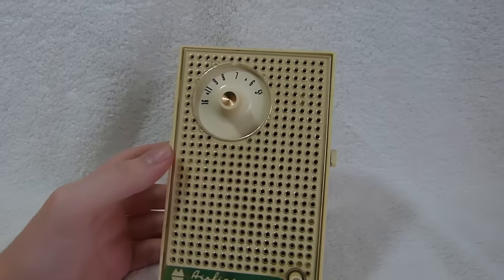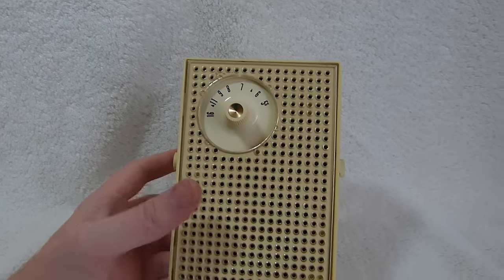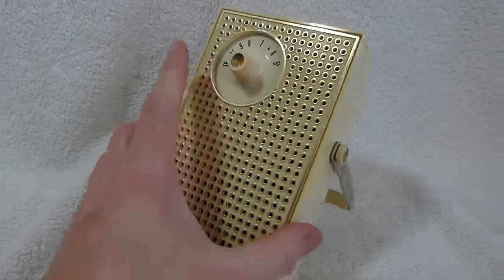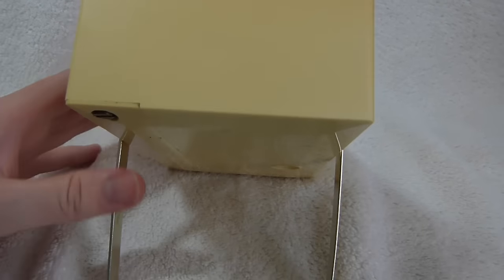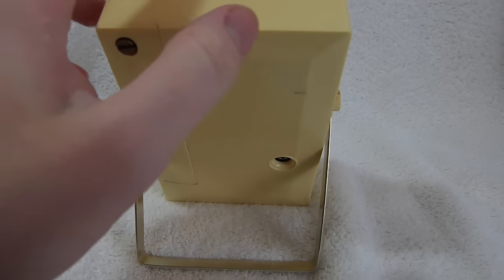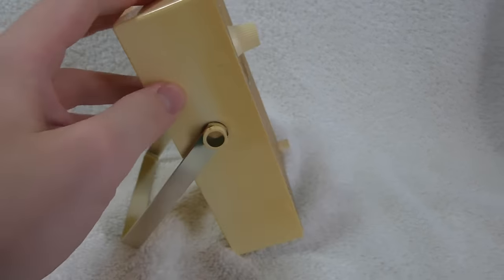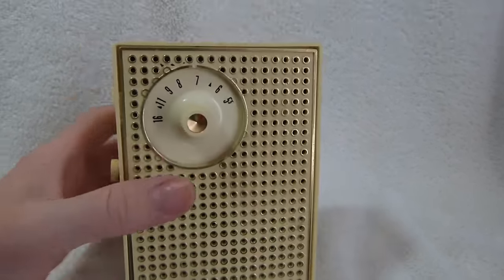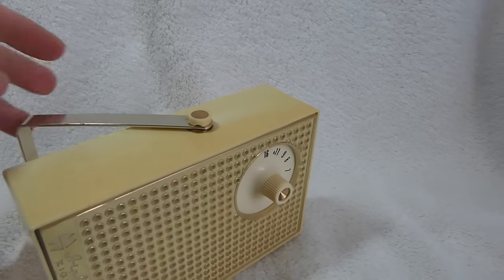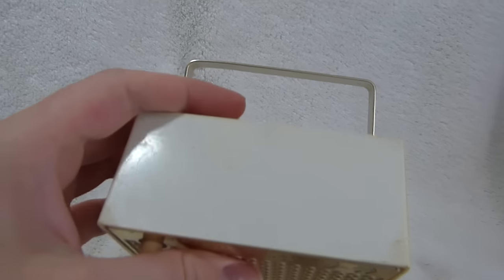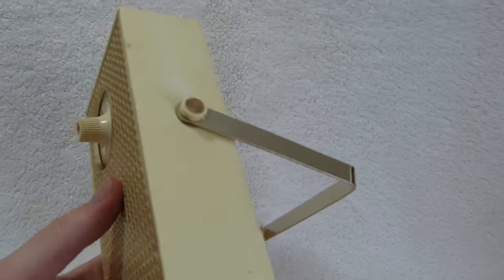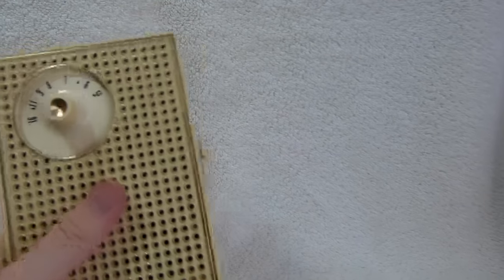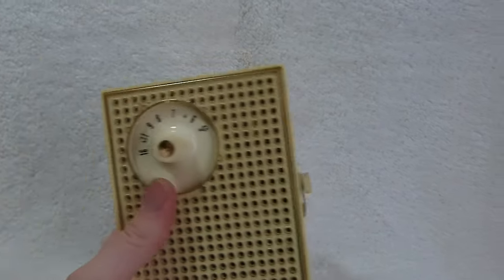Here's a Wards Airline model 1214A from 1961. All I've done to this set is clean it up a bit. You can see that it's got a fair bit of yellowing. It was originally white as it still is on the bottom, but the other surfaces are all pretty yellowed.